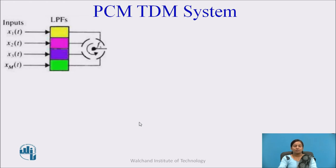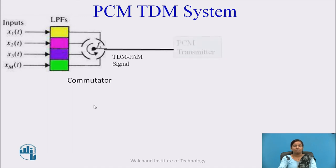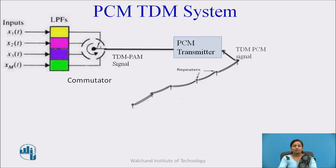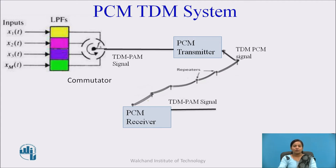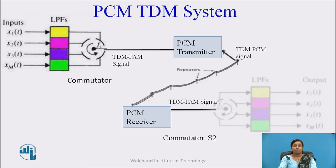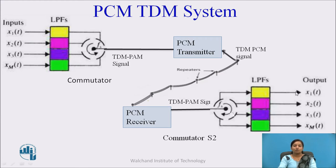You will see the PCM-TDM system. First, there is a low-pass filter and commutator at the transmitter side, connected to the PCM transmitter. Then repeaters are used along with one communication channel, which may be optical fiber or coaxial cable. Then there is a PCM receiver, followed by a second commutator switch, again connected to low-pass filters to recover the original data.